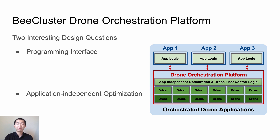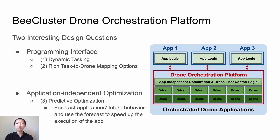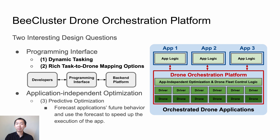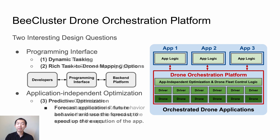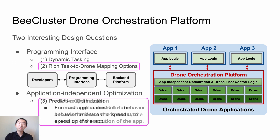In B-Cluster, we give our answers to these two questions. B-Cluster implements three key features. The first two features are about the programming interface. For developers, we want to make our programming interface easy to use and flexible to support different application logic and different coding styles. For the platform, we want the interface to be informative so that the backend can get enough information to do optimization. To achieve these goals, we use a dynamic task graph as our programming model. We support dynamic tasking and provide rich task-to-drone mapping options to developers. The third feature is predictive optimization, which is a highlight of this paper. While the application is running, our platform can forecast the application's future behavior and use the forecast to make better optimization in terms of reducing execution time. The task-to-drone mapping options and the predictive optimization are two new contributions we made in this work.